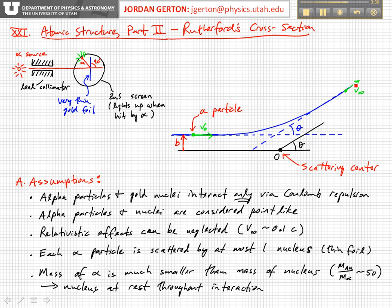The Coulomb interaction is not playing a role when the particle gets very far away, so it just follows a straight-line trajectory. It comes in to a distance of closest approach. At any point along the trajectory, we can define its distance from the nucleus R — from the scattering center. At its closest distance, this would be R_min.